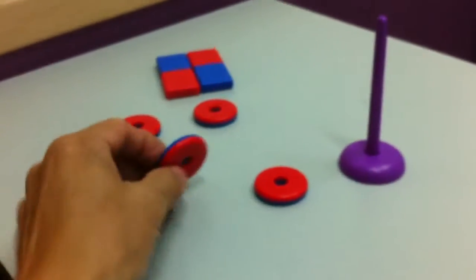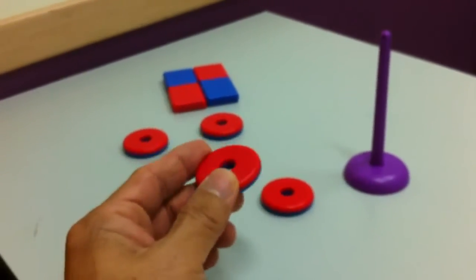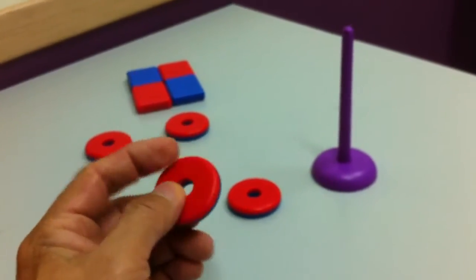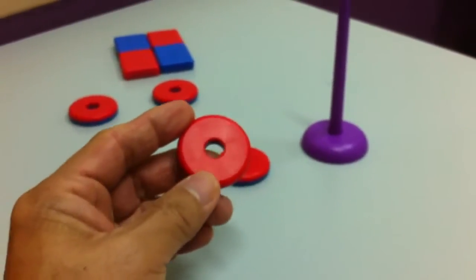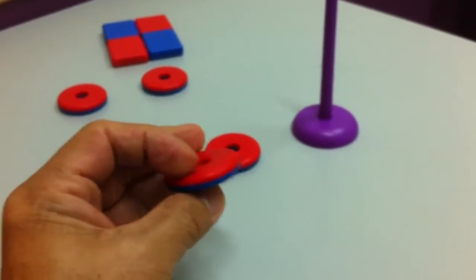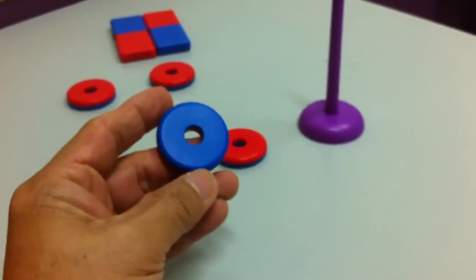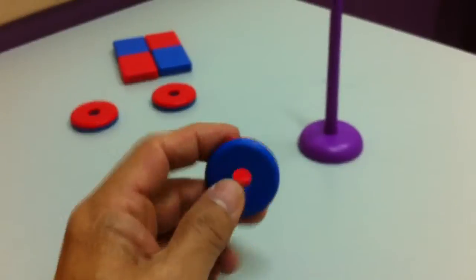Each ring magnet has two poles, one on each side as you can see, coded by the different colors. The red side is a north pole and the reverse blue side is a south pole.